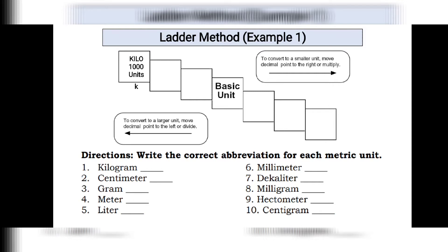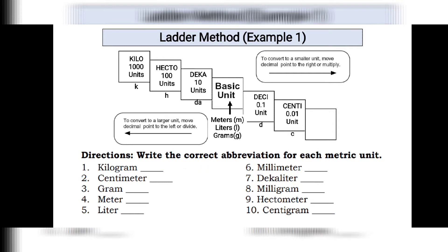The prefixes are: kilo, hecto, deka, then the basic units which are meters, liter, and gram, followed by desi, centi, and mili. You also have to be familiarized with the letters that correspond to each prefix. For kilo that is k, for hecto that is h, for deka that is da, for desi that is d, for centi that is c, and for mili that is m.